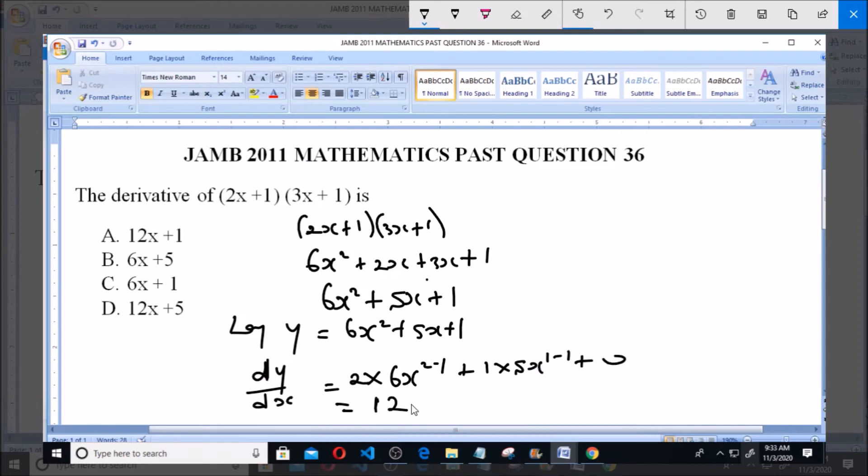Plus 1 times 5 will give us 5, and x raised to the power of (1 - 1) gives us 0 as x⁰, which is 1. So we have 12x + 5, which is the answer to this question, and that is option D: 12x + 5 is the derivative of this.